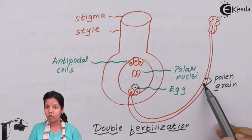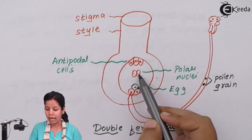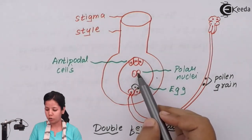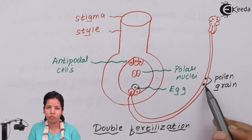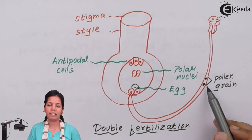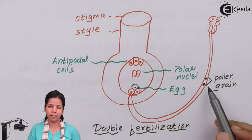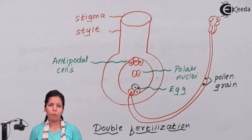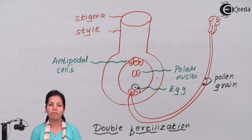The second pollen grain fuses with the polar nuclei, and together they form three cells which is the triploid primary endosperm — this process is called triple fusion. In simple language, syngami plus triple fusion equals double fertilization, which helps to form a seed. I hope you are clear with the concept of double fertilization and how it takes place. Thank you.